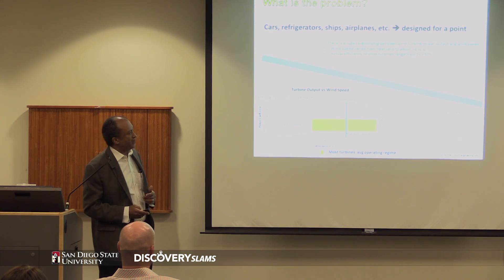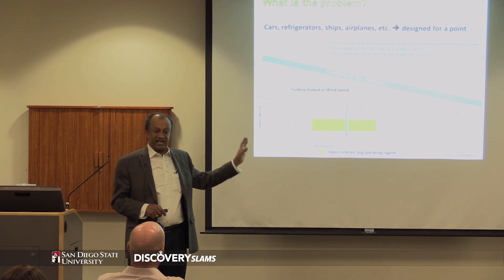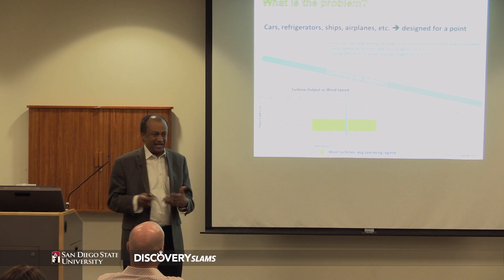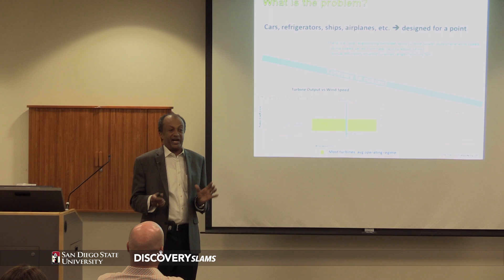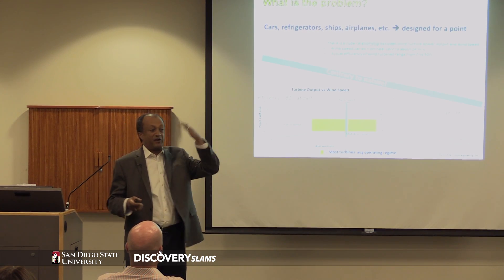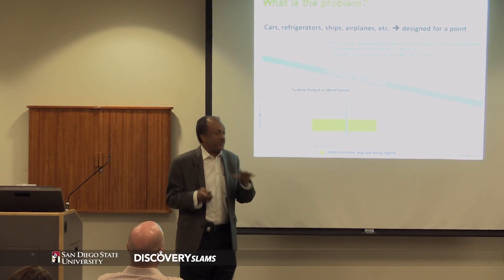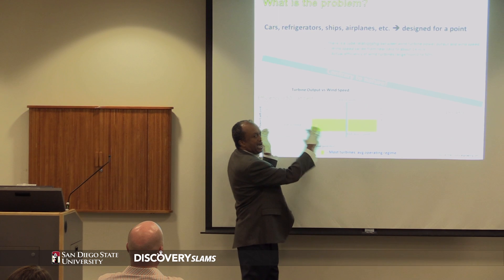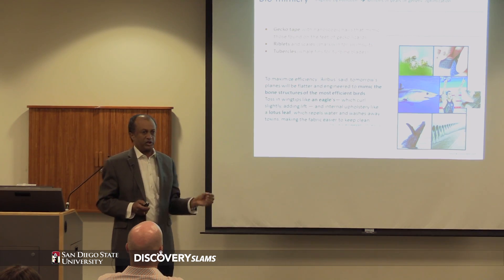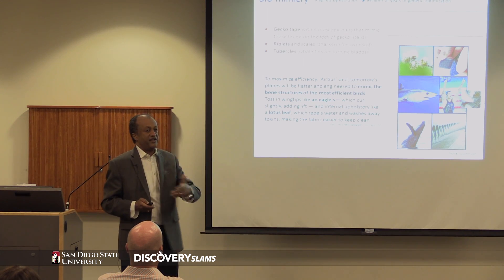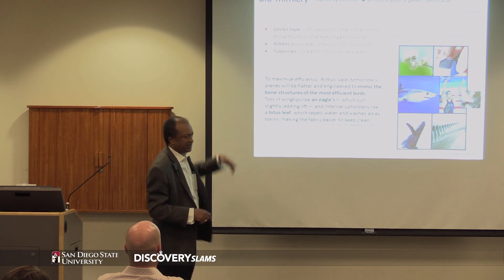This doesn't happen in nature. Nature doesn't design its creatures — human beings, birds, fish — for a point. Just imagine if we were designed to walk or run at only one speed; when we started walking slowly, our efficiency would drop and we wouldn't be able to walk to the cafeteria, let alone run. Nature's efficiency is practically flat throughout the entire load range. I think it's very important to understand the part-load issue. Nature doesn't design for a part load; everything in engineering is designed for a part load and the efficiency at part load is bad. Biomimicry has answered a lot of questions and is improving this part-load concept.